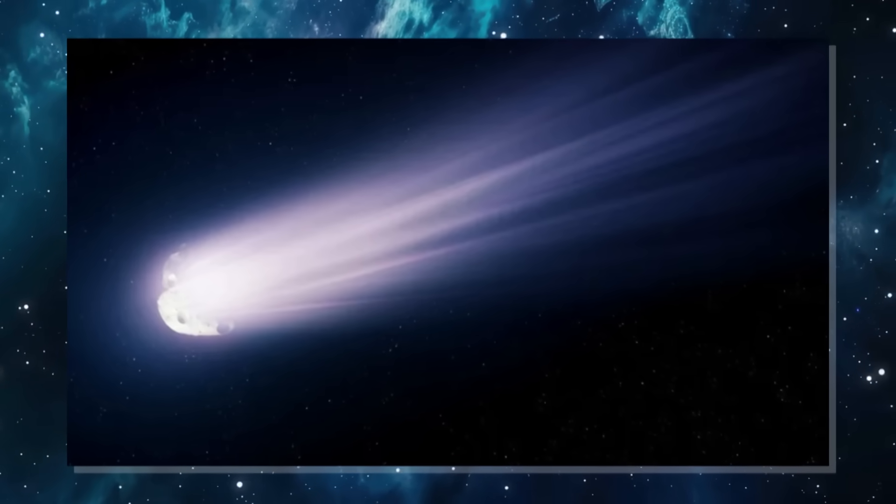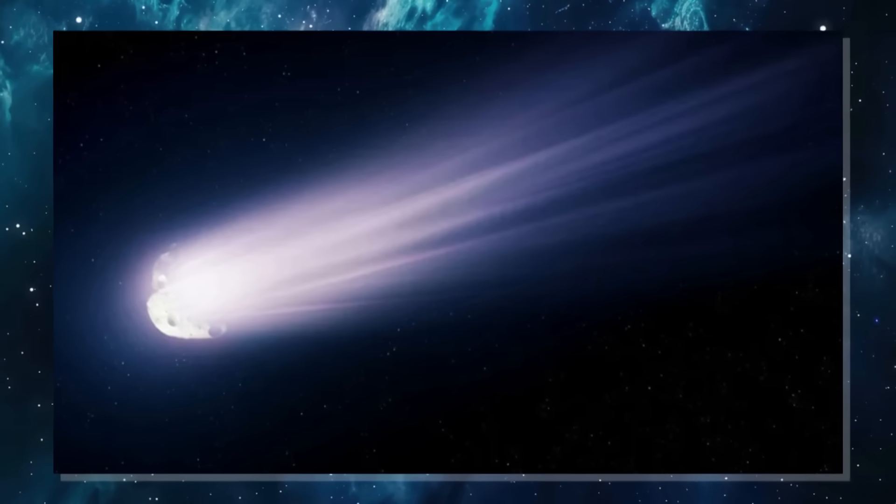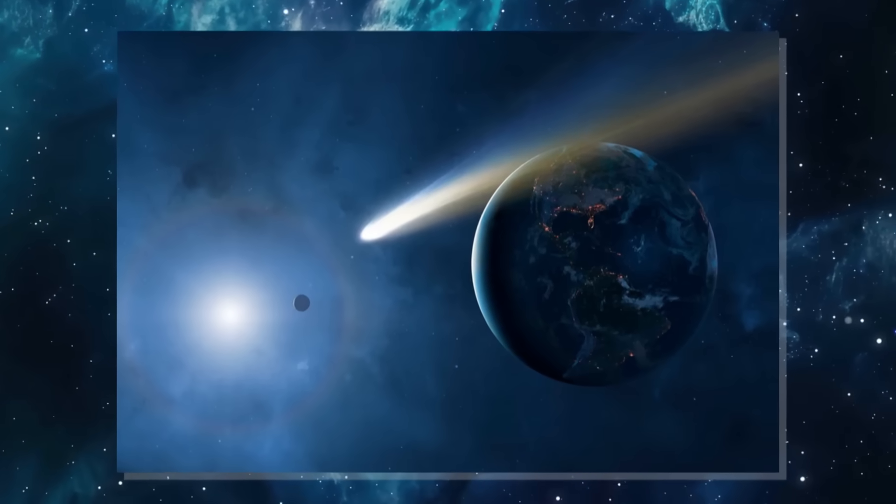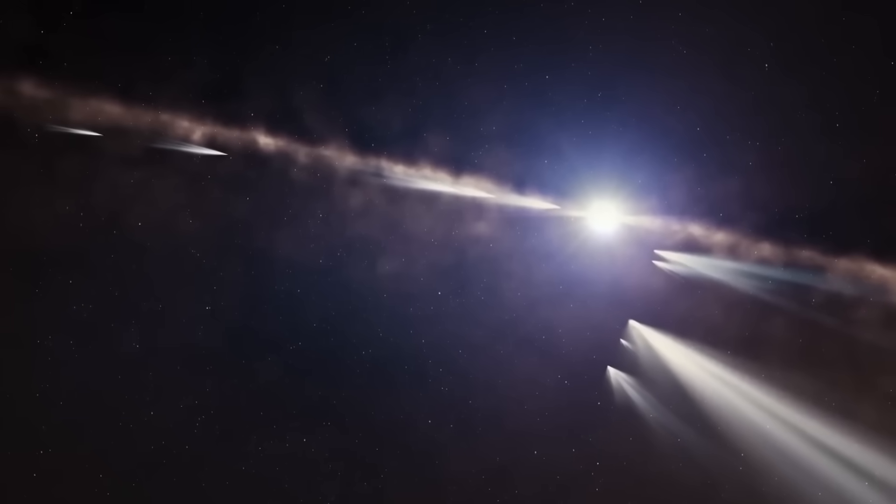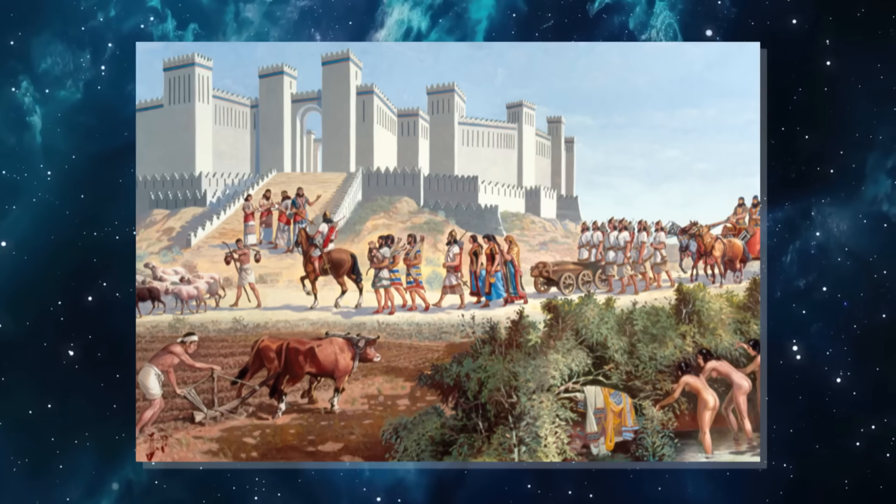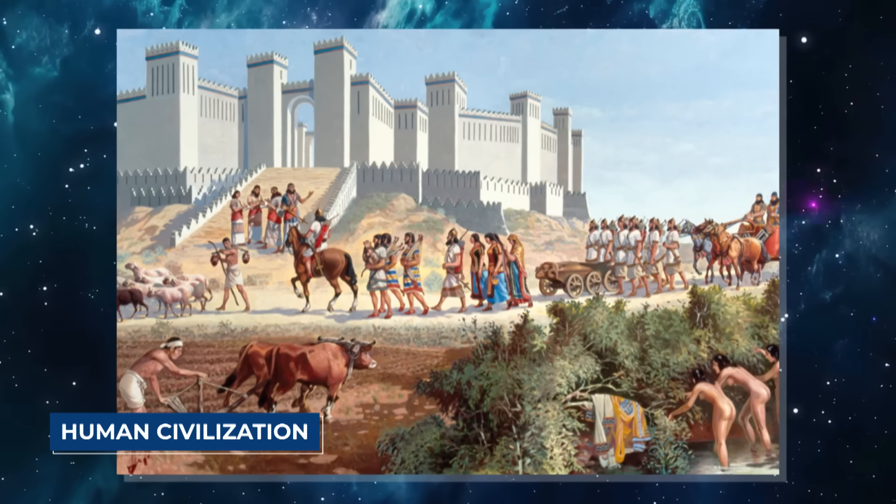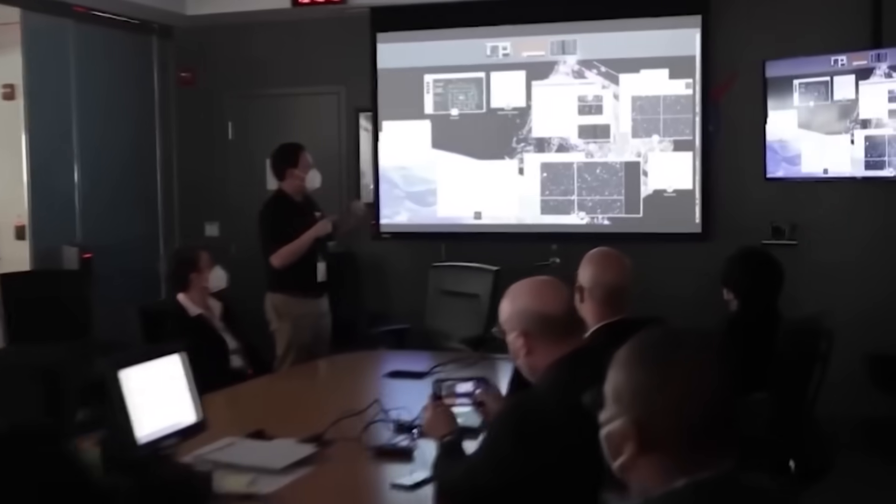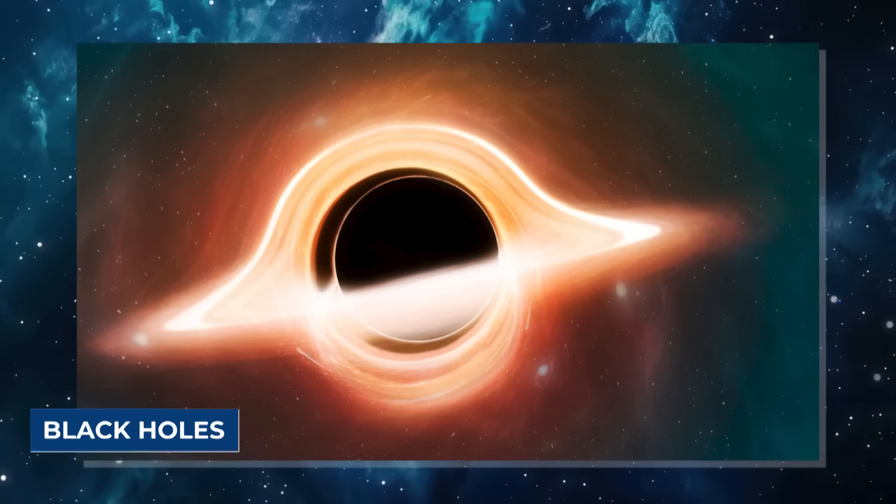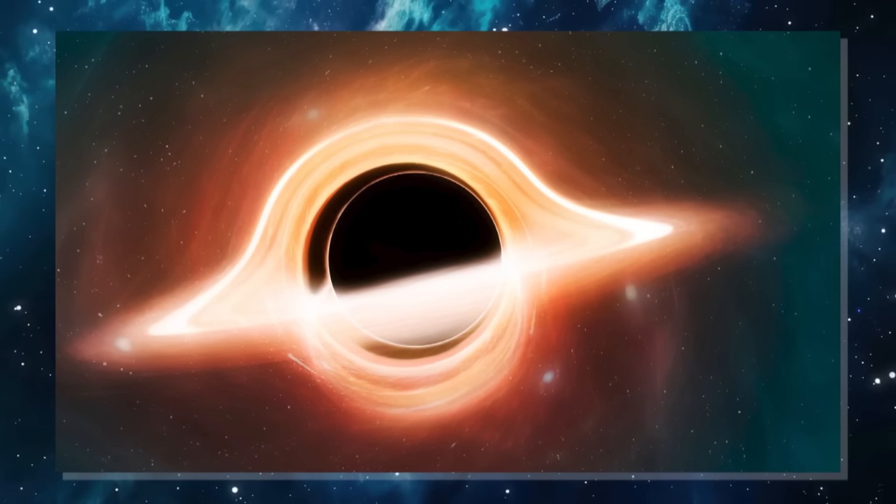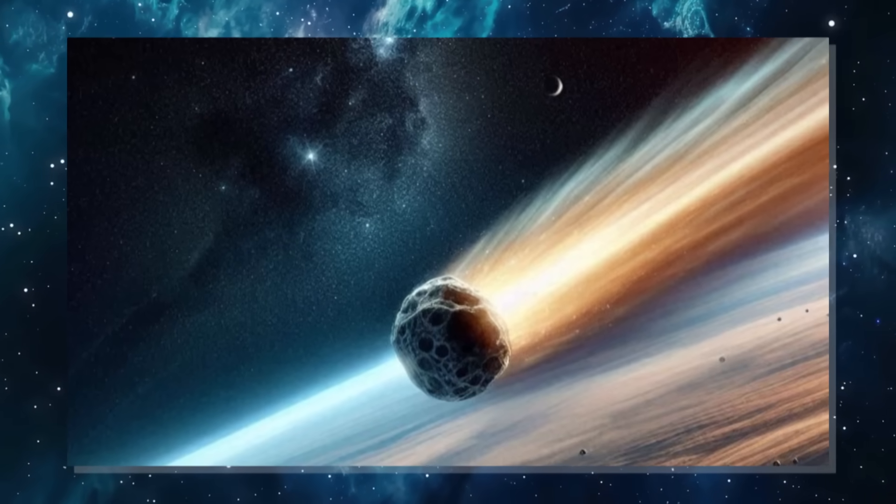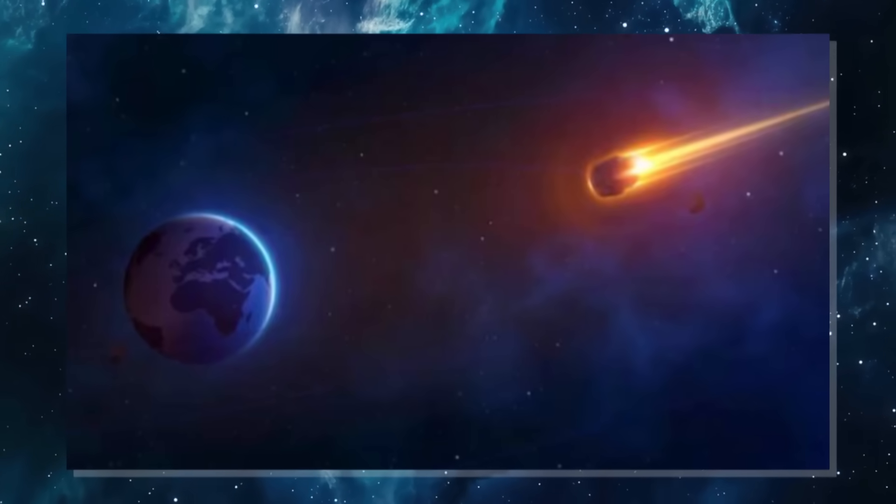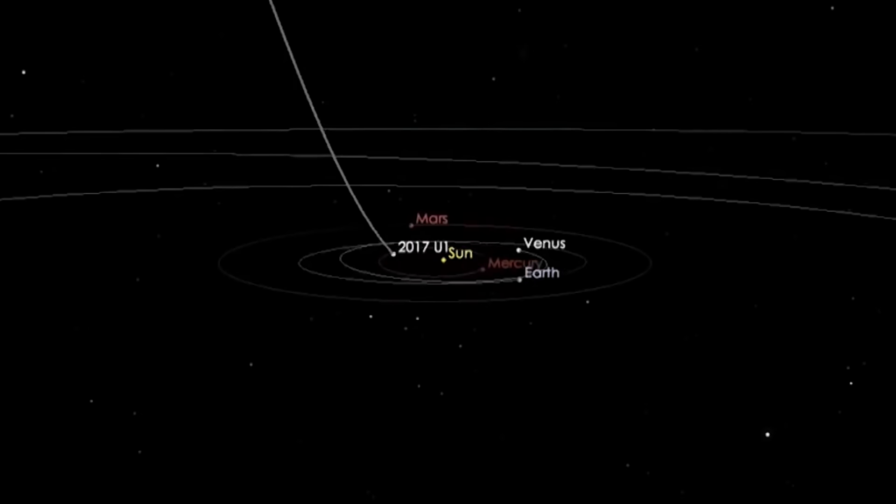And then, there is the core itself. If 3I Atlas's 10 gigawatt output was shocking, SWAN's core is staggering. Its energy levels are calculated to exceed 10,000 gigawatts every second. To put this in perspective, that is nearly the total power consumption of human civilization, compressed into a single, interstellar machine. Some theorists compare it to the energy release of merging black holes, scaled down but perfectly contained. In their words, if 3I Atlas is a scout, then SWAN is the fortress, a leviathan crossing the void on a mission that defies easy classification.